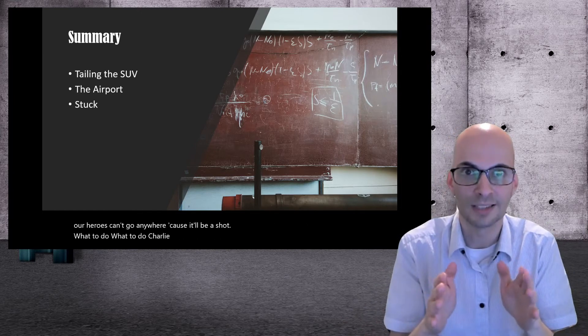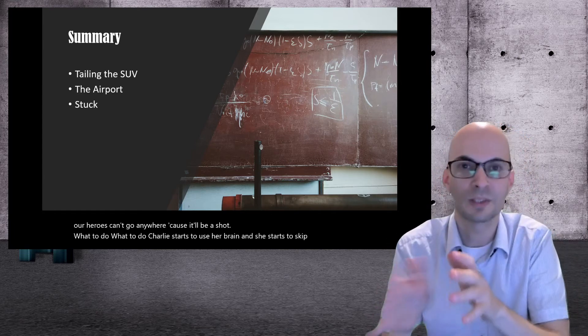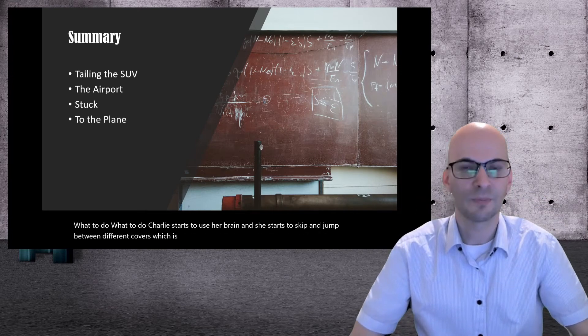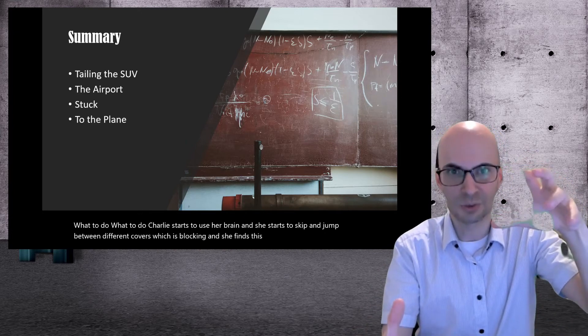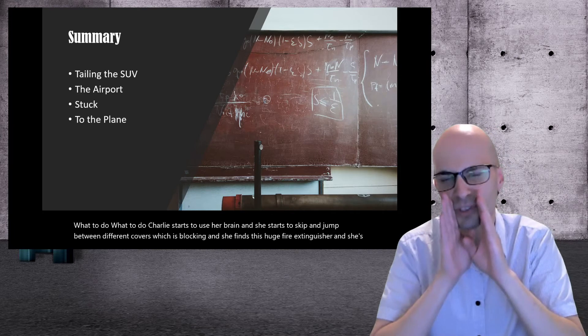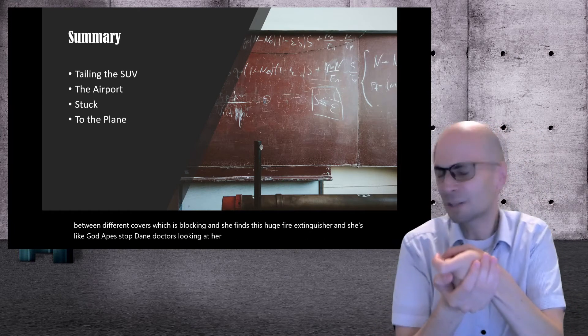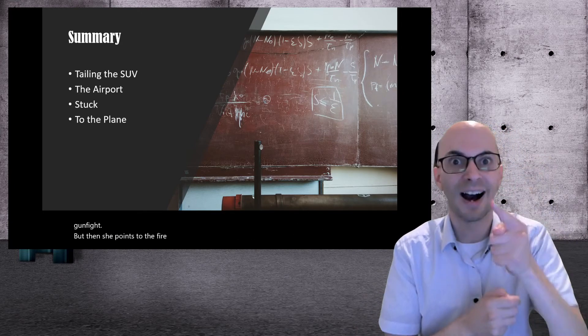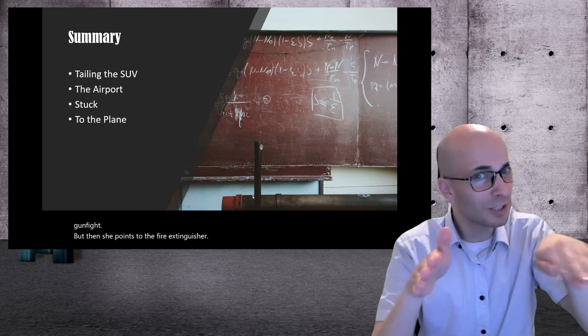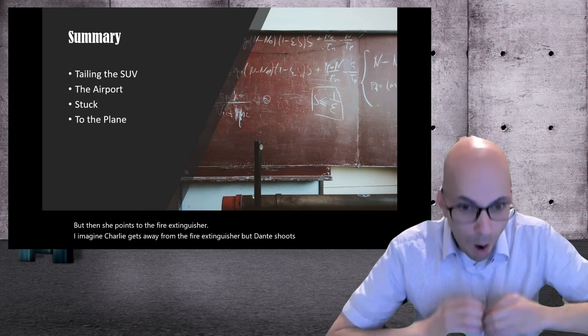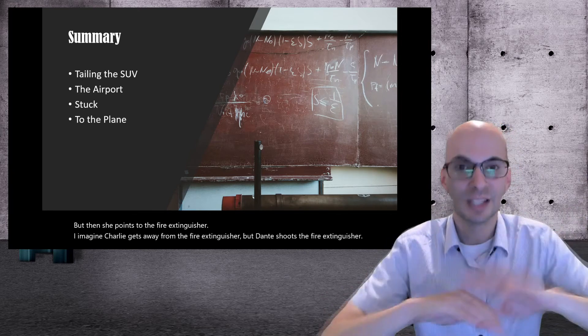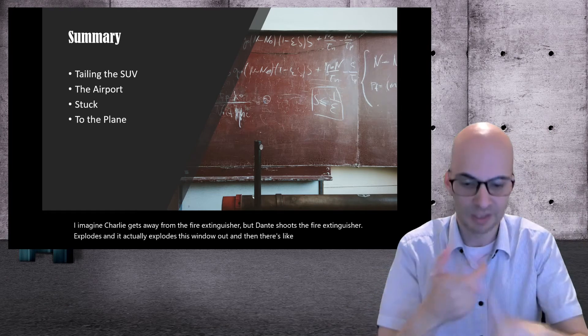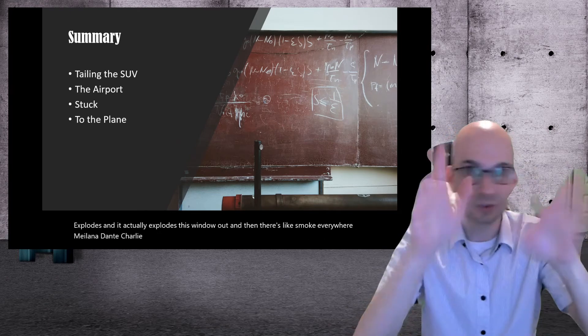Charlie starts to use her brain and she starts to skip and jump between different covers, which is blocking. She finds this huge fire extinguisher and she's like, Dante, Dante. Dante's looking at her like, oh come on, leave me alone, I'm in a gunfight. But then she points to the fire extinguisher. I imagine Charlie gets away from the fire extinguisher, but Dante shoots the fire extinguisher. Poof! It explodes and actually explodes this window out. And then there's like smoke everywhere. Milana, Dante and Charlie jump out the window through the smoke.